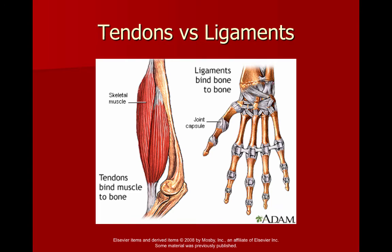If you have trouble remembering, think about the Achilles tendon. If your Achilles tendon ruptures, the tendon connecting to the muscle is gone, and the entire calf muscle — the gastrocnemius — balls up and shoots up into your calf, creating a little ball there, because the tendon no longer holds it down to your heel. That's a good visual to remember that tendons are muscle to bone. Ligaments are going to be bone to bone only.